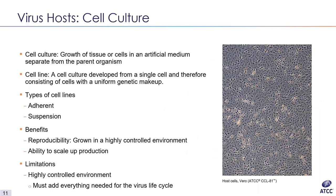The other common host is cell culture, which is a highly controlled artificial environment. We use cell lines developed from a single cell with uniform genetic makeup. Cell lines are usually adherent or suspension cells — adherent cells attach to the surface of the vessel to create a monolayer, while suspension cells remain floating in the growth medium. The benefit of cell culture is that it's easy to scale up production and propagation is highly reproducible. The limitation is that you must choose your cell line carefully, ensuring the host is both susceptible and permissive to the virus.